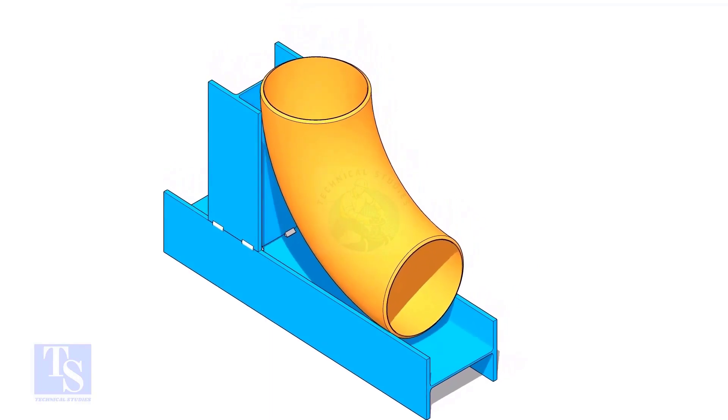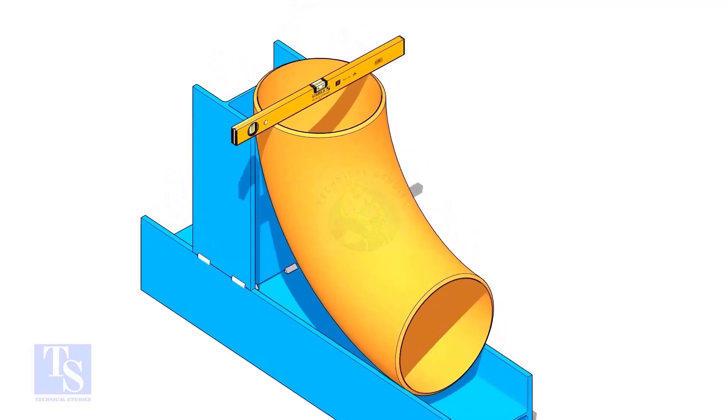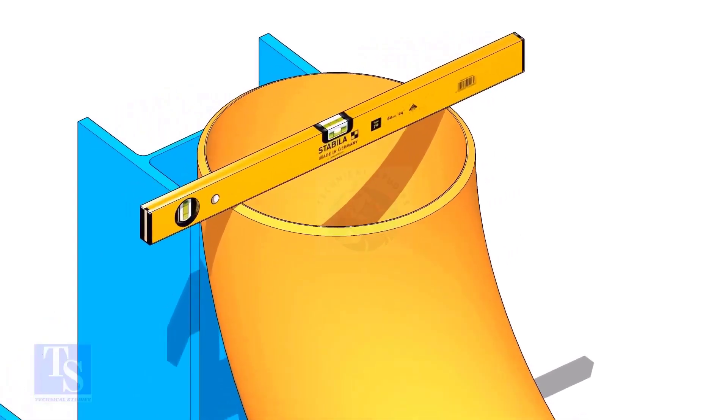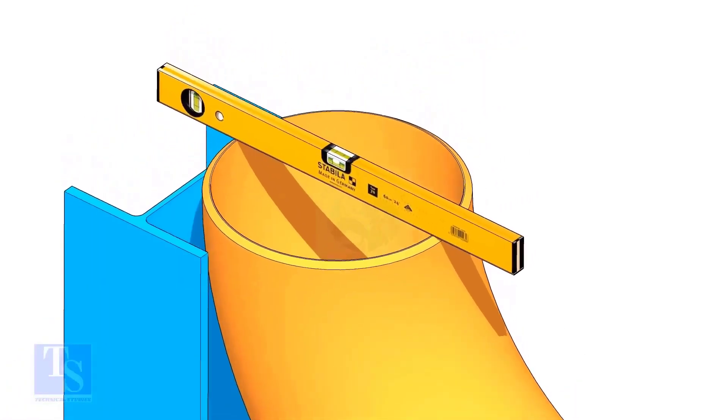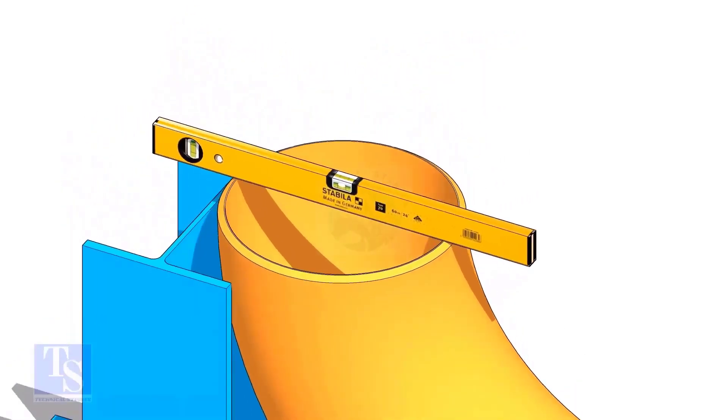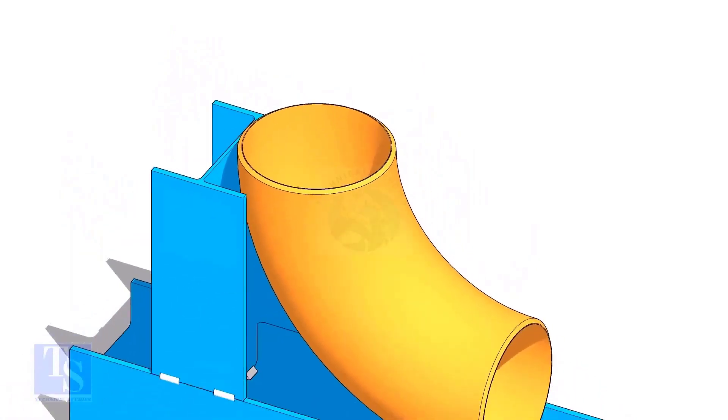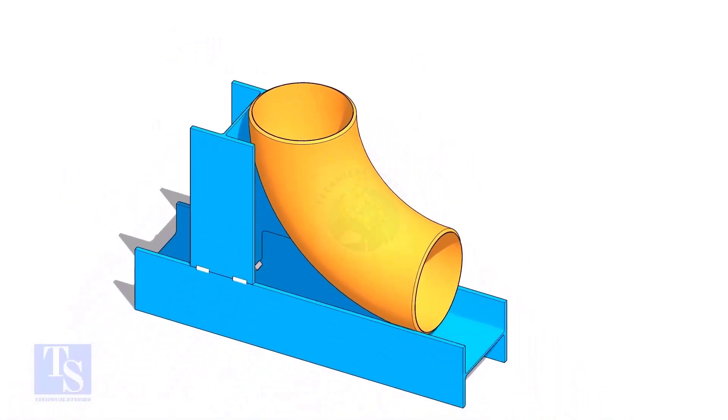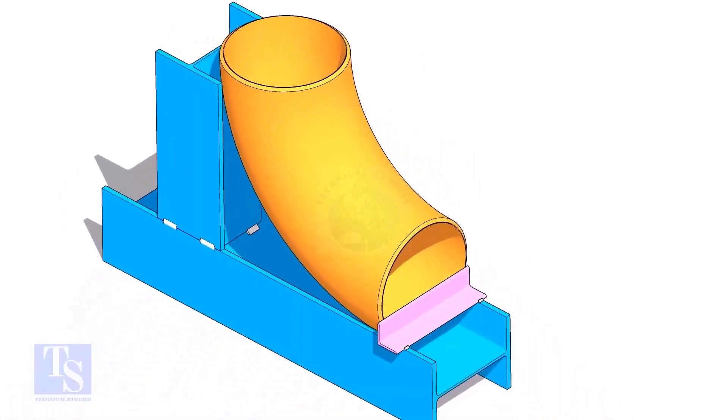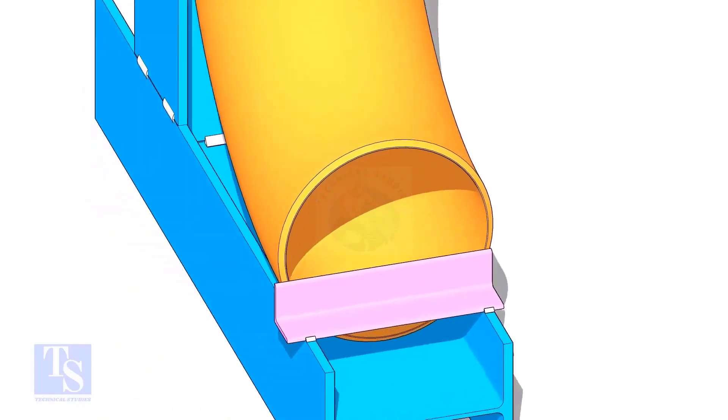Put the elbow in the jig. Level the top face of the elbow on both ways. Tack weld a piece of angle bar or a piece of a plate at the bottom side of the jig to arrest the elbow.